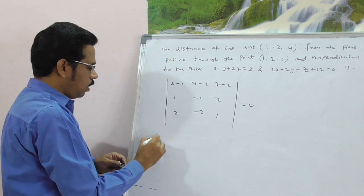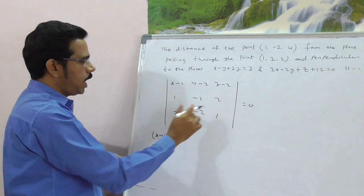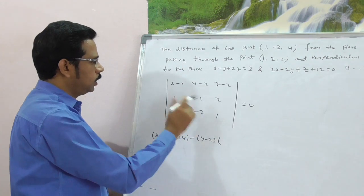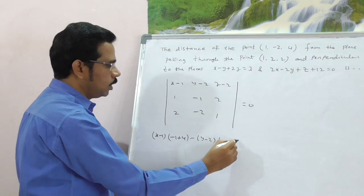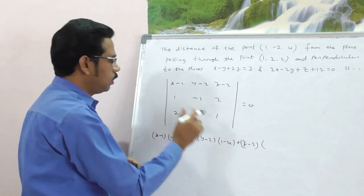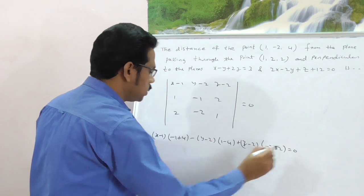That is (X-1) of (-1 + 4) minus (Y-2) of (1-4) plus (Z-2) of, what is Z-2 of, this is -2 + 2 is equal to 0.